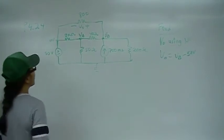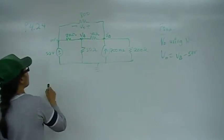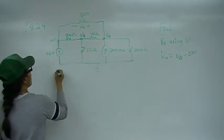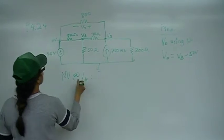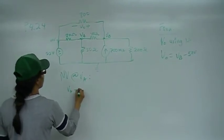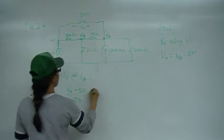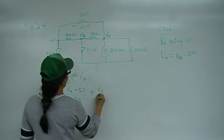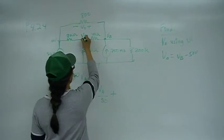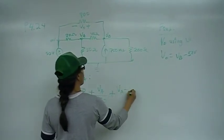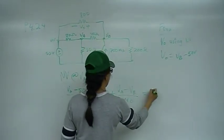Now let's go ahead and write our node voltage equation. I don't know what VA is, so I'm going to start there. At node VA, that's going to give me VA minus 50 over 80 — that's the current in that branch. Plus VA over 50 — that's this branch current. Plus VA minus VB over 40 — that's going to be that branch current, and they all sum up to zero.